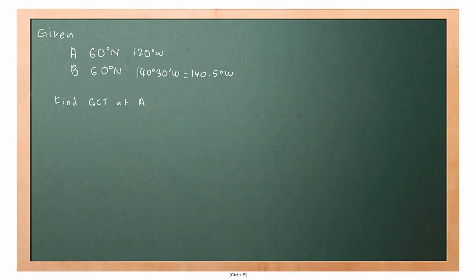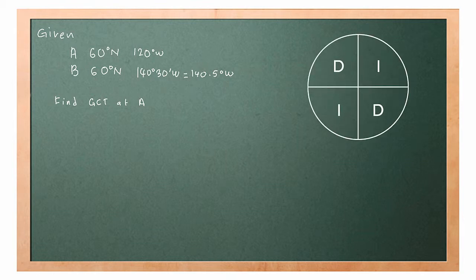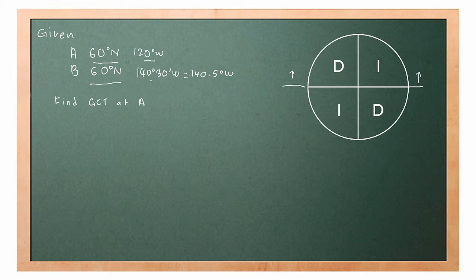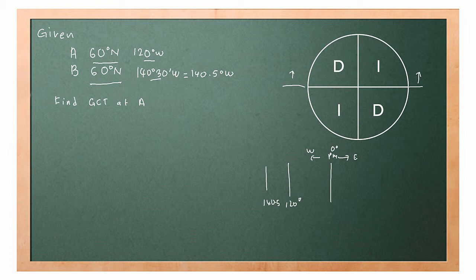For the second method, we use the DIID diagram. First, determine in which quadrant positions A and B are located. Since the latitude is 60°N, we are in the northern hemisphere. Assuming the centre line is the prime meridian, to the right is east and to the left is west. 120°W is here and 140.5°W is here, so position A is here and position B is here.